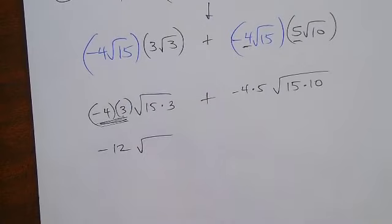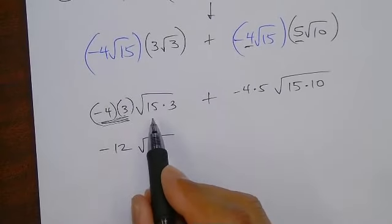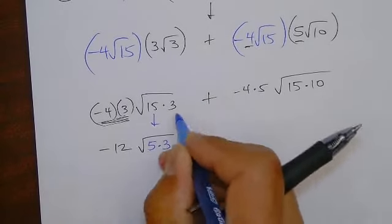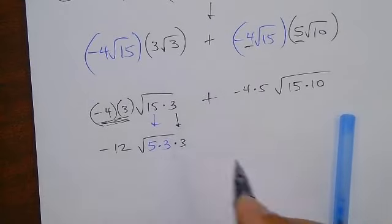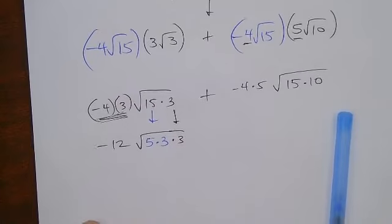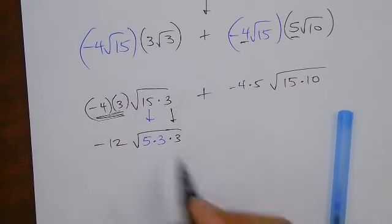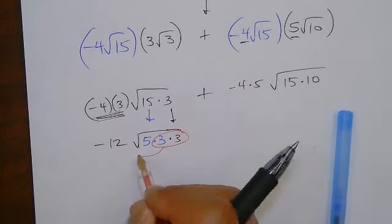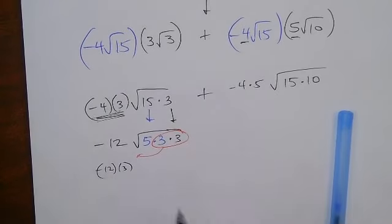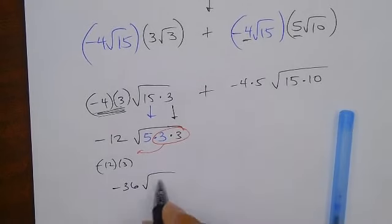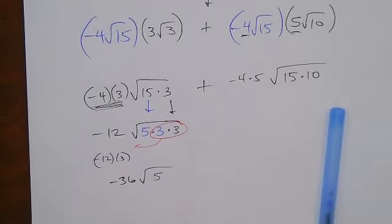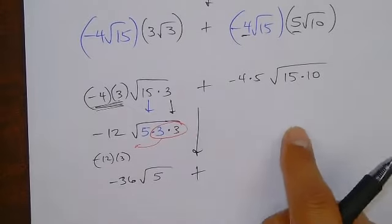Negative 12 root, because I can multiply that. And then the 15 times 3, they do have a common factor. 15 here is 5 times 3, so then this 3 now will be next to this one. And we know what's going to happen next. If I have two of the same kind, they go out. So it's going to be negative 12 times 3, so that's going to be negative 36 root 5, because 5 stayed in. We're done with this part of the problem. Did everybody get negative 36 root 5? Plus.